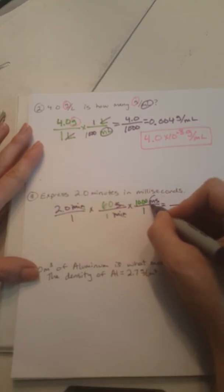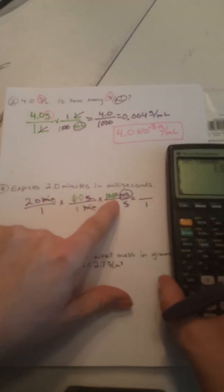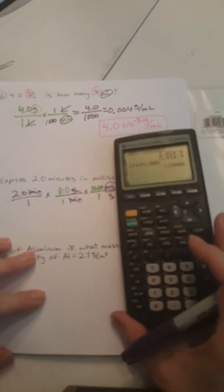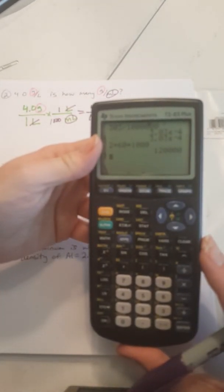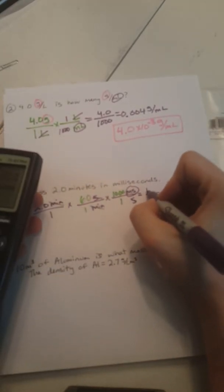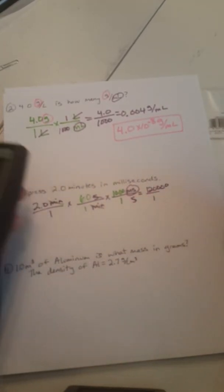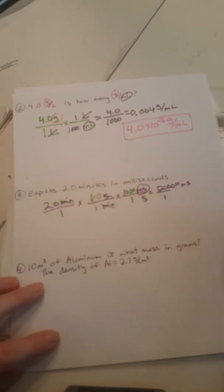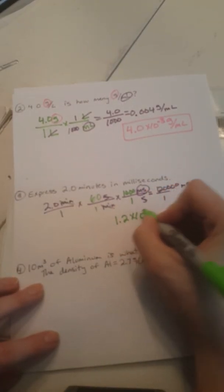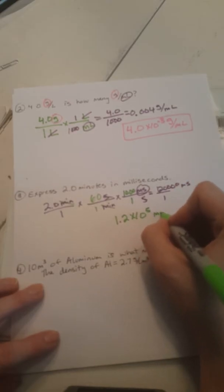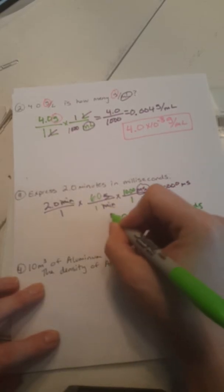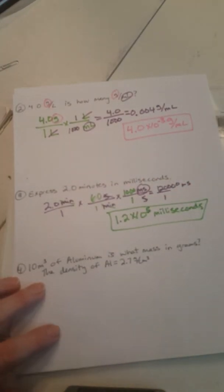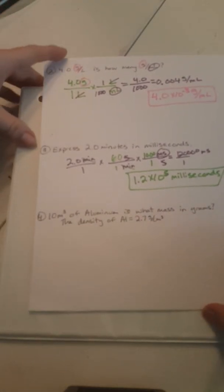The seconds cancel and I end up with milliseconds as my units. I just multiply 2.0 times 60 times 1000 and get 120,000 milliseconds. In scientific notation, the decimal goes after the first significant digit: 1.2 times 10 to the fifth milliseconds.